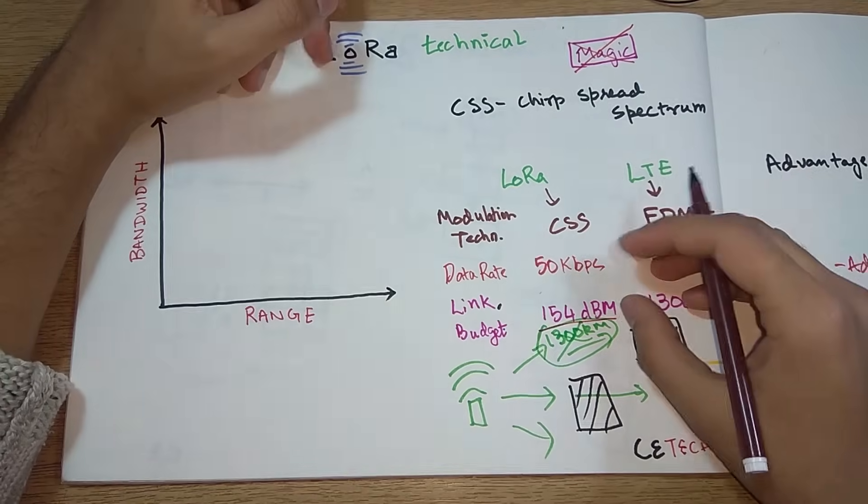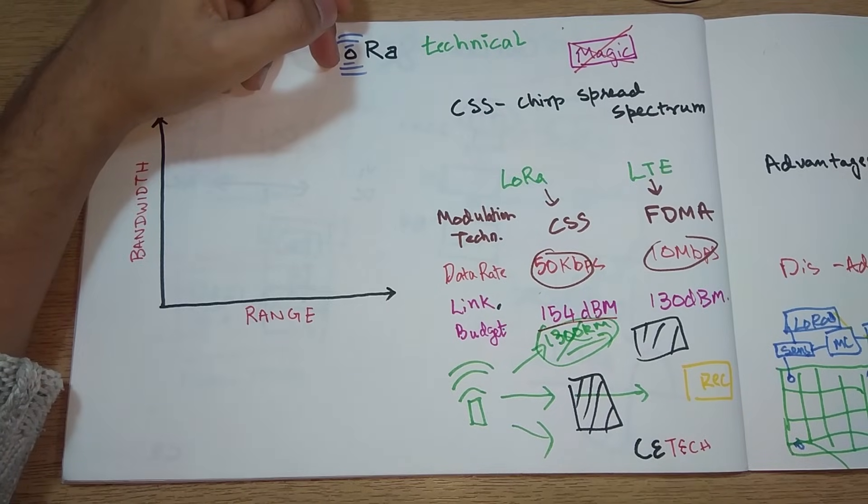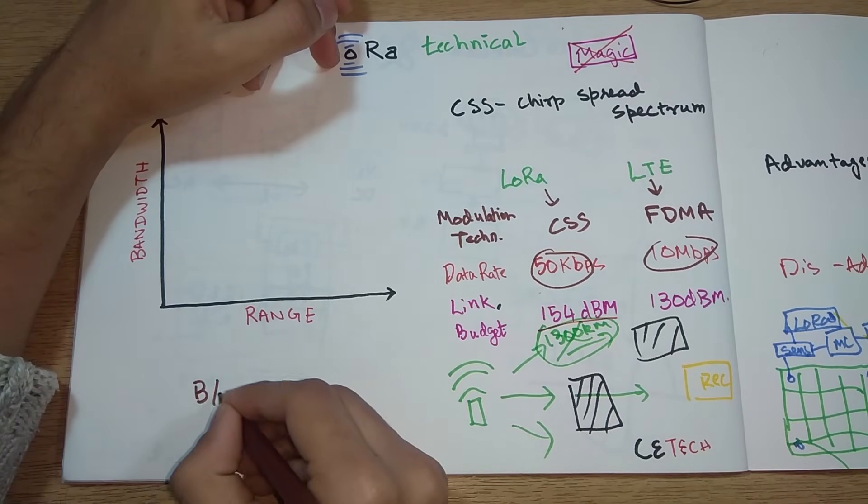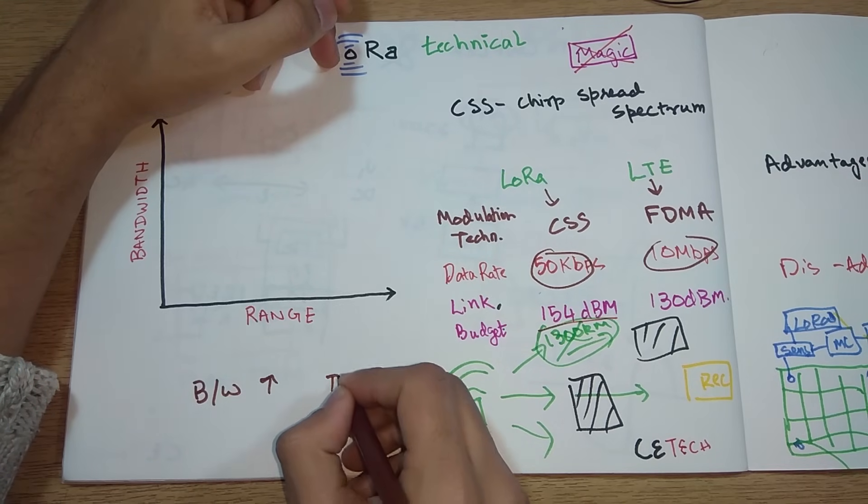This is a very good link budget that we get for such a cheap price. The main trade-off is the data rate, and data rate is directly linked with the bandwidth. More the bandwidth, more the data rate.